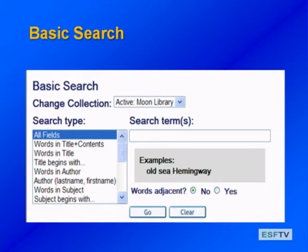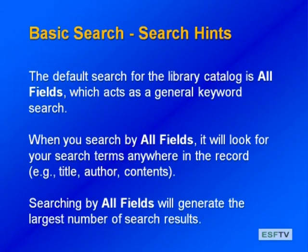This is the basic search screen you'll see when you go into our library catalog. When you get to the basic search screen, you're going to have the option to search for keywords, authors, titles, and subjects. If you're searching by keyword, the system is putting an 'or' in between all of your keywords, so it's going to be searching titles, authors, contents, and subjects — and you're going to get a really large number of results.